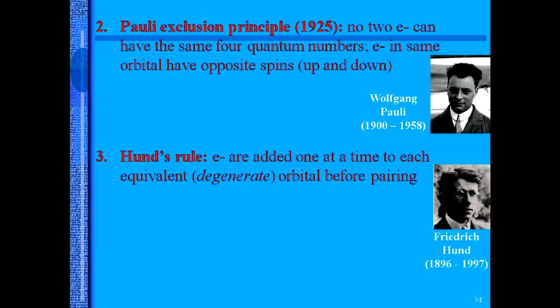We also need to speak about Hund's rule. Hund's rule states that electrons are added one at a time to each equivalent orbital before pairing. So in the p orbitals, you need an electron in each of the orientations before you can start pairing them.